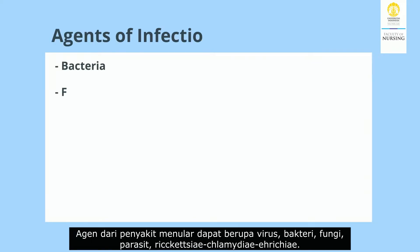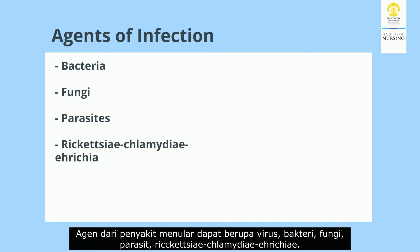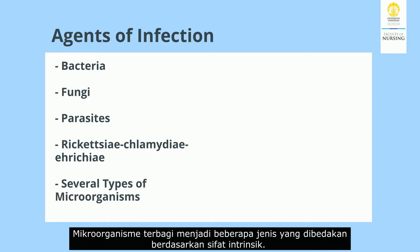Agents of infectious disease can be viruses, bacteria, fungi, parasites, rickettsiae, chlamydia, and other microorganisms. Microorganisms are divided into several types which are distinguished based on their intrinsic properties.